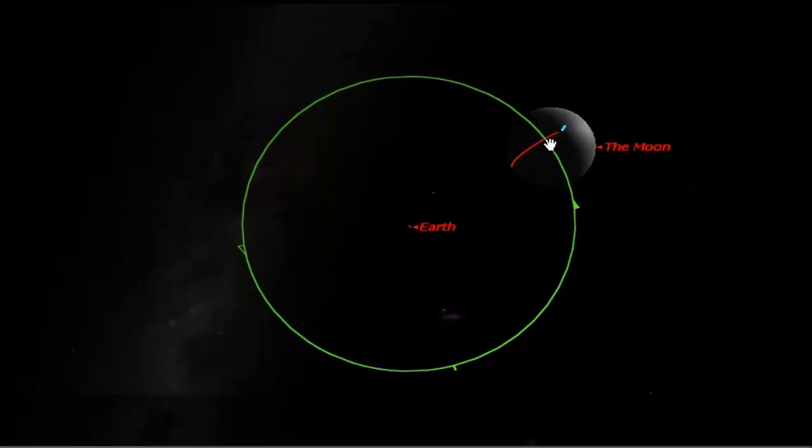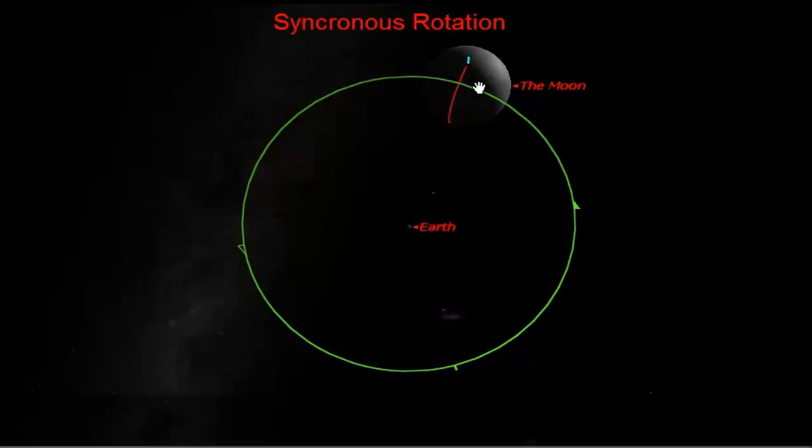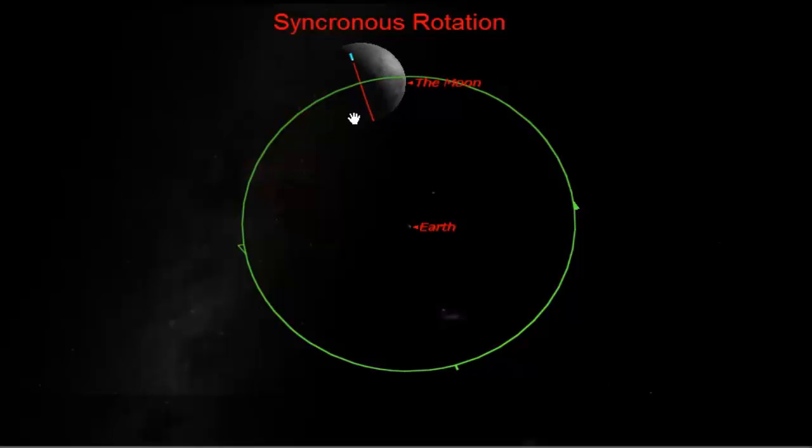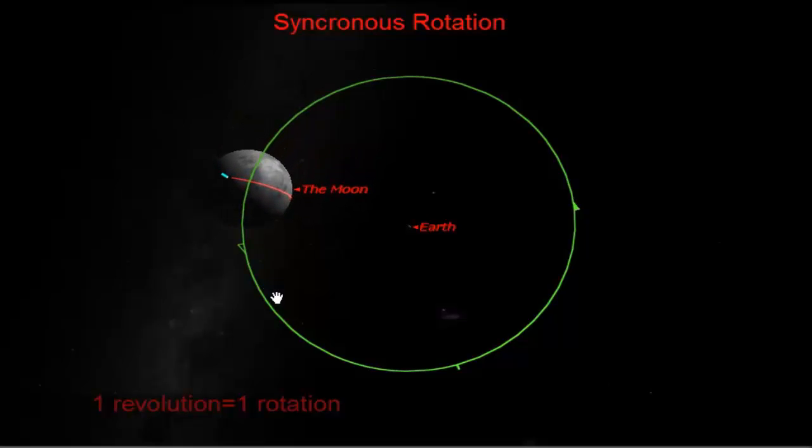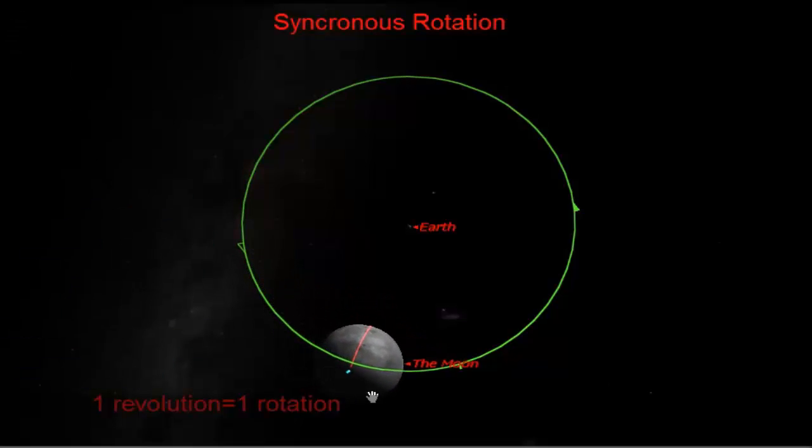Now why can we only see one side of the moon? Well, this is due to something called synchronous rotation. It takes the exact same amount of time for the moon to rotate once on its axis as it does to revolve once around the Earth. Very important topic: synchronous rotation.